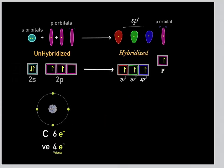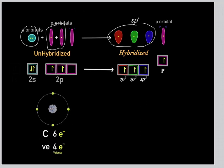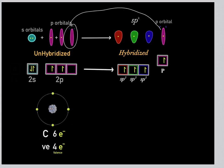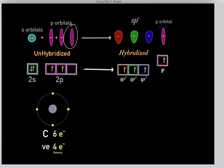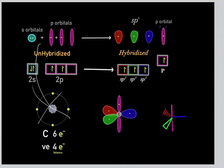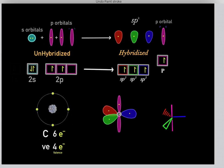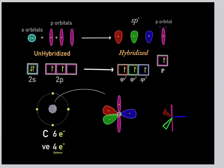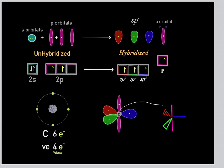We could also go through sp2 hybridization, where instead we take one s orbital and two of the p orbitals, and these orbitals fuse and hybridize to form three sp2 hybridized orbitals. So therefore, one p orbital is left unhybridized and remains unchanged. If a carbon goes through sp2 hybridization, we'll have three sp2 hybridized orbitals, one unhybridized p orbital, and this forms a trigonal planar geometry. So this would be an sp2 hybridized carbon.